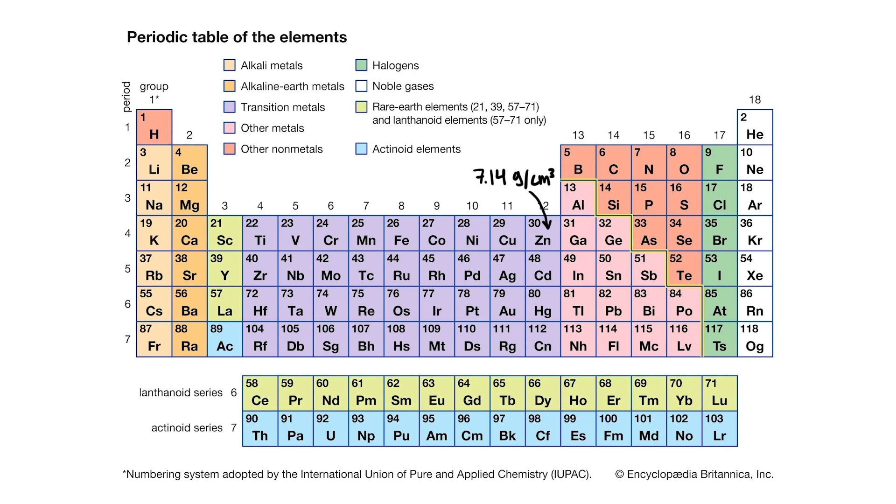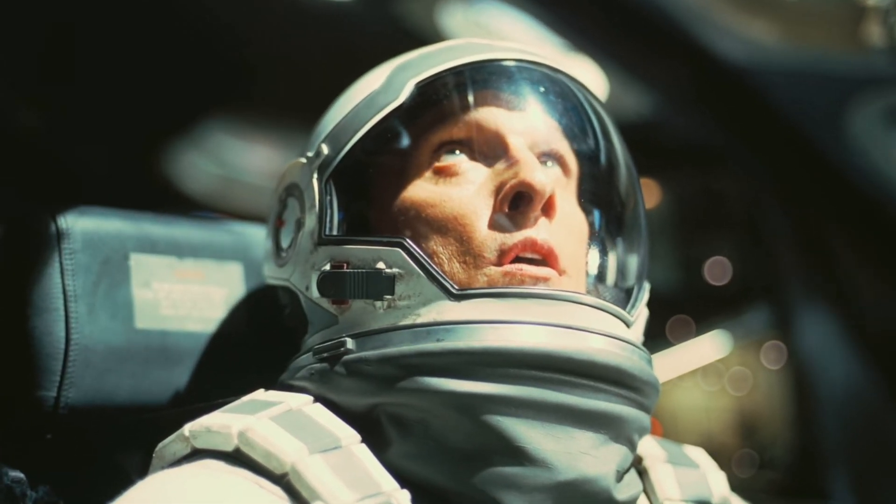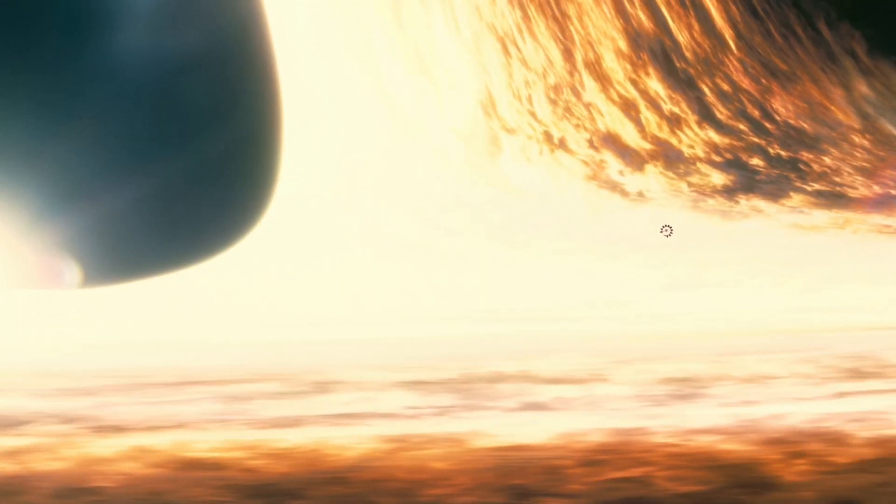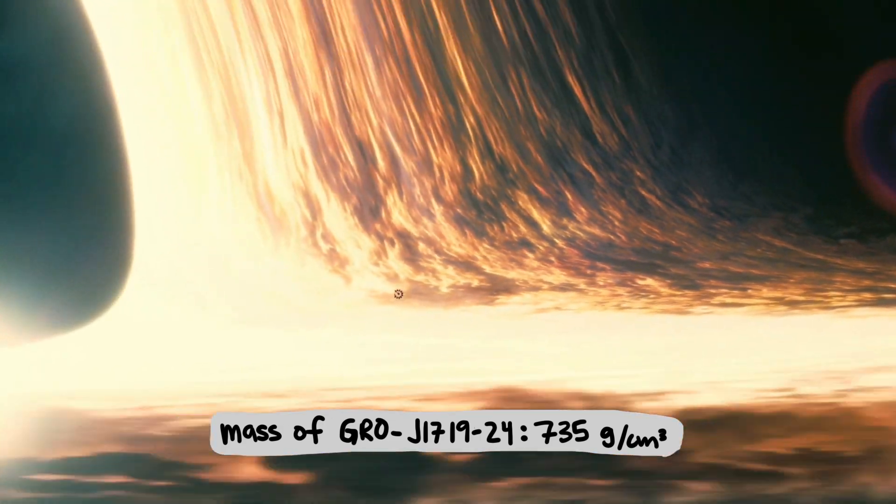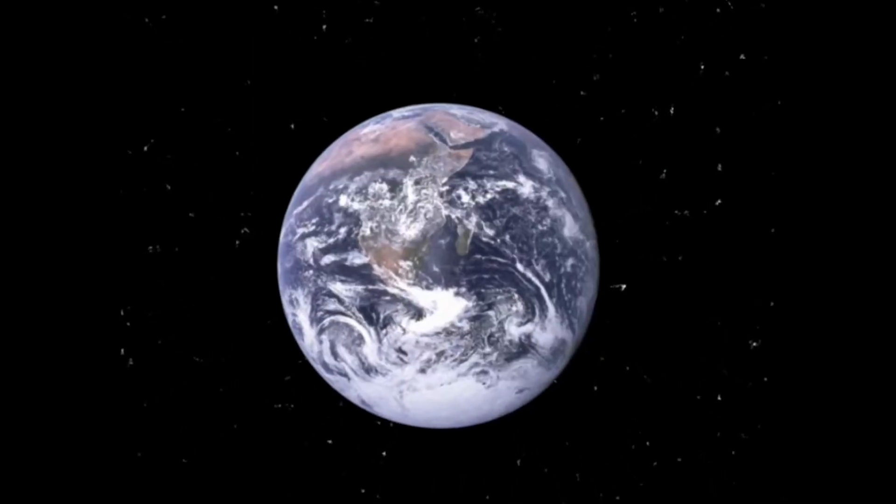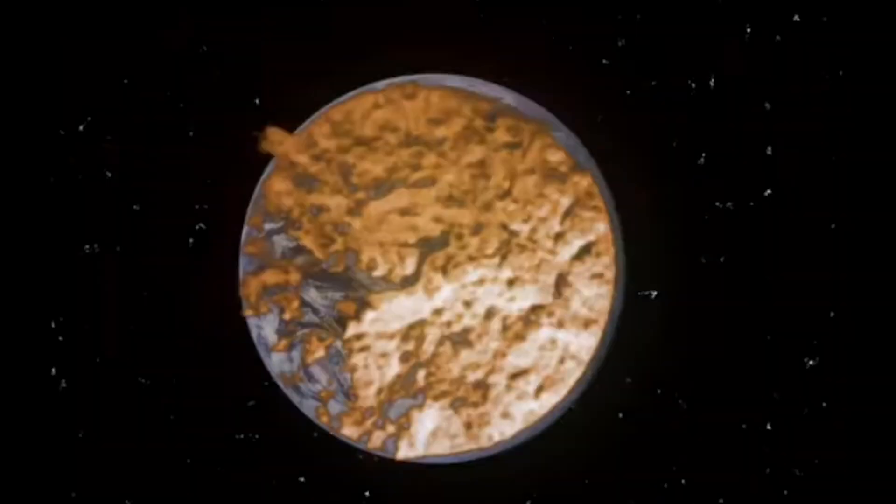But the densest element on Earth is osmium, which is only three times more dense than zinc. But a low-mass black hole, like GRO J171924, would do it. Its density is estimated around 735 grams per centimeter cubed. But there might be a lot more to worry about than blunt force impact if a penny-sized black hole was coming at you.